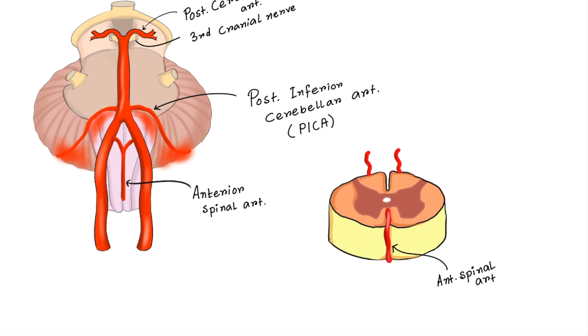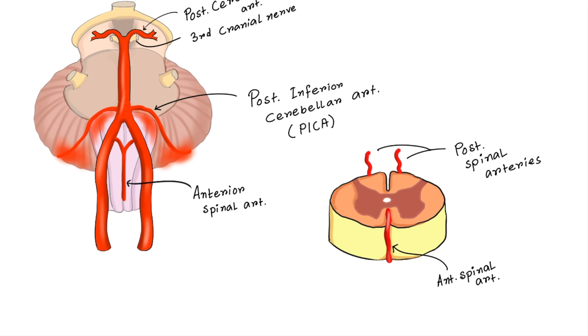In this diagram, you can see the anterior spinal artery and there are two posterior spinal arteries. Anterior two-third of the spinal cord is supplied by the anterior spinal artery and posterior one-third is supplied by two posterior spinal arteries. Those two branches come out directly from the vertebral artery or from PICA.